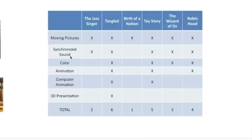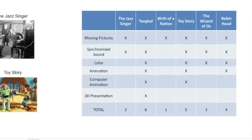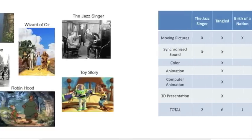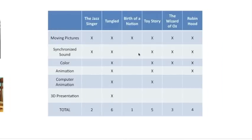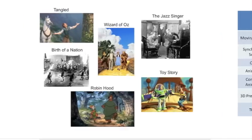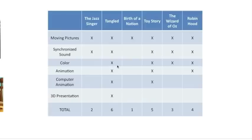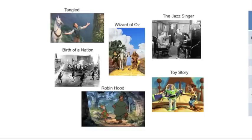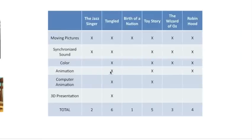The next characteristic is color. Birth of a Nation and The Jazz Singer don't have color, so the other four get marked. For animation, three of the movies are animated, while The Wizard of Oz, The Jazz Singer, and Birth of a Nation are not. For computer animation, Robin Hood was not computer animated, so only Toy Story and Tangled are marked. For 3D presentation — released in theaters as 3D — Tangled is the only one that qualifies.